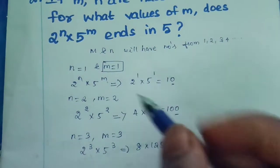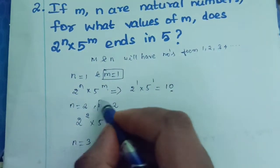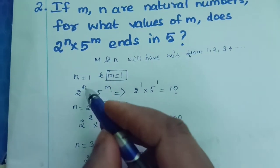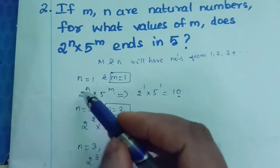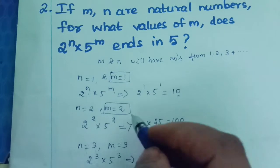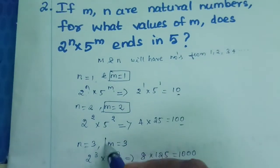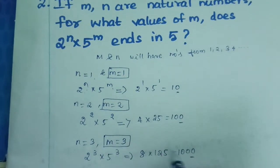So we put m is equal to 1. When we put n value only, we will get the answer. That's what we are assigning values for n also, okay? So m is equal to 3 also ending with 0.